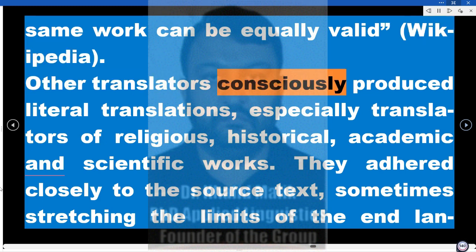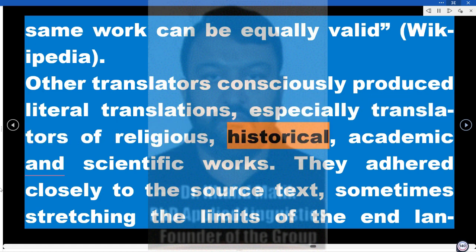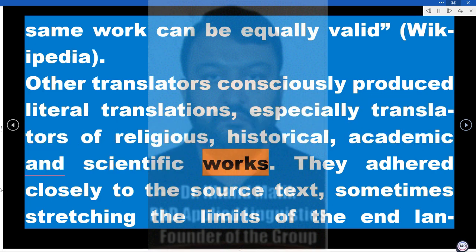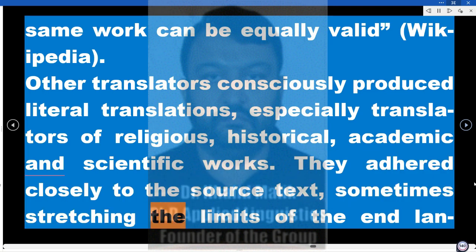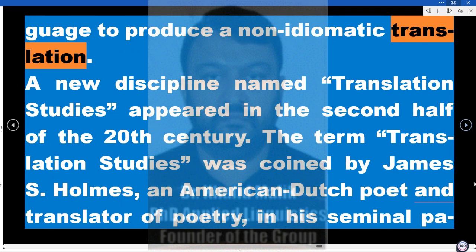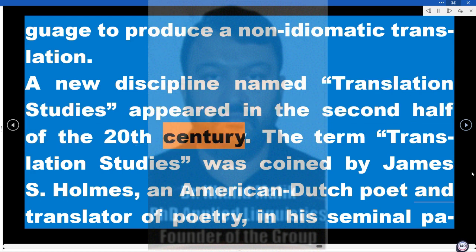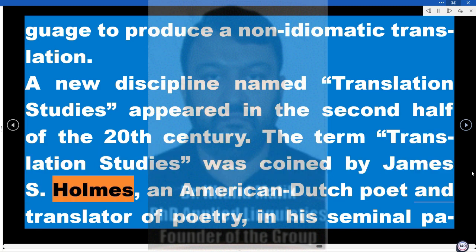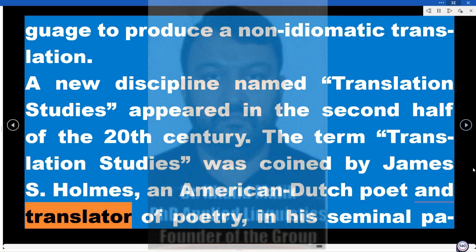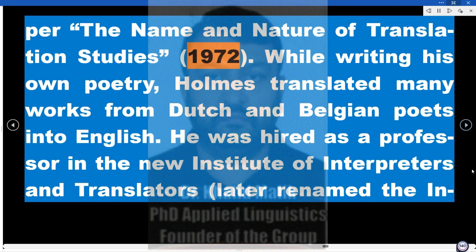Other translators consciously produced literal translations, especially translators of religious, historical, academic, and scientific works. They adhered closely to the source text, sometimes stretching the limits of the end language to produce a non-idiomatic translation. A new discipline named Translation Studies appeared in the second half of the 20th century. The term 'Translation Studies' was coined by James S. Holmes, an American-Dutch poet and translator of poetry, in his seminal paper 'The Name and Nature of Translation Studies' (1972).